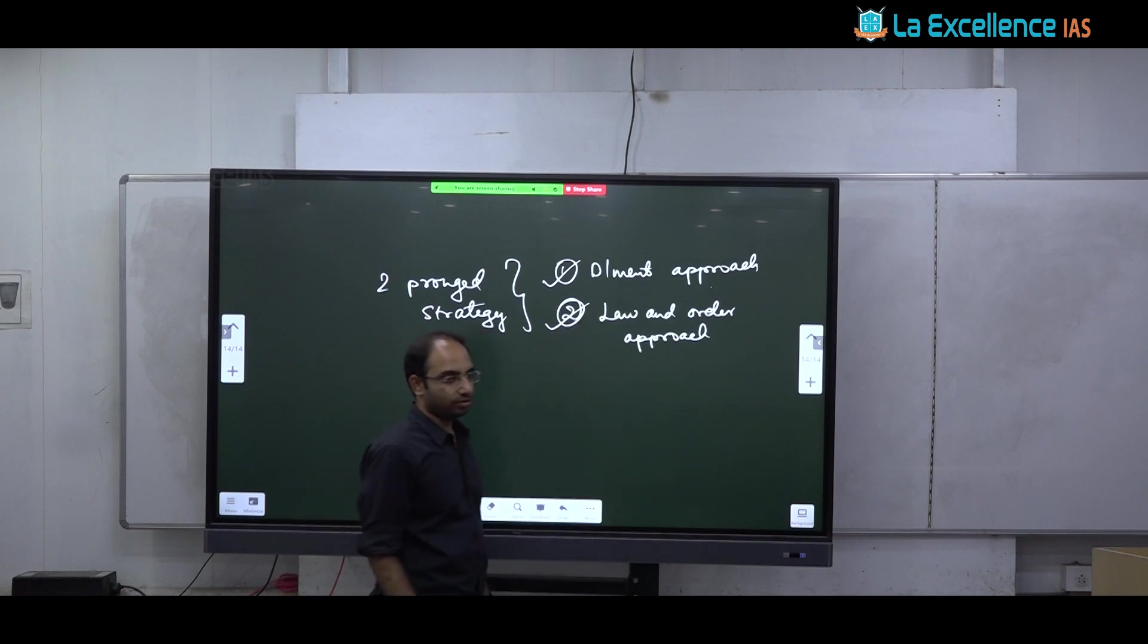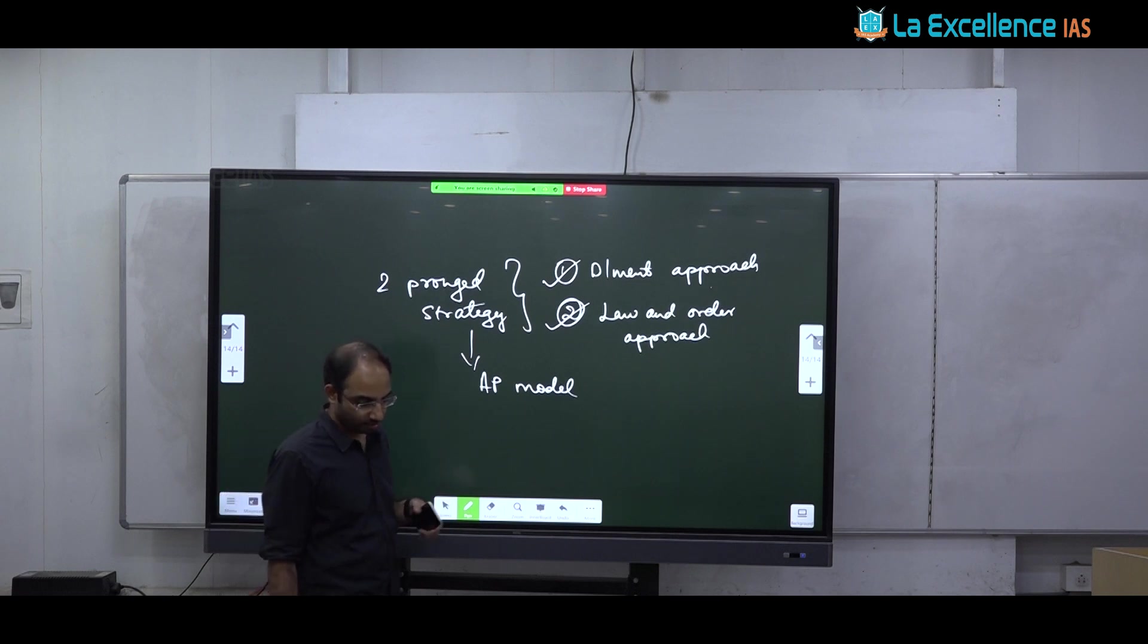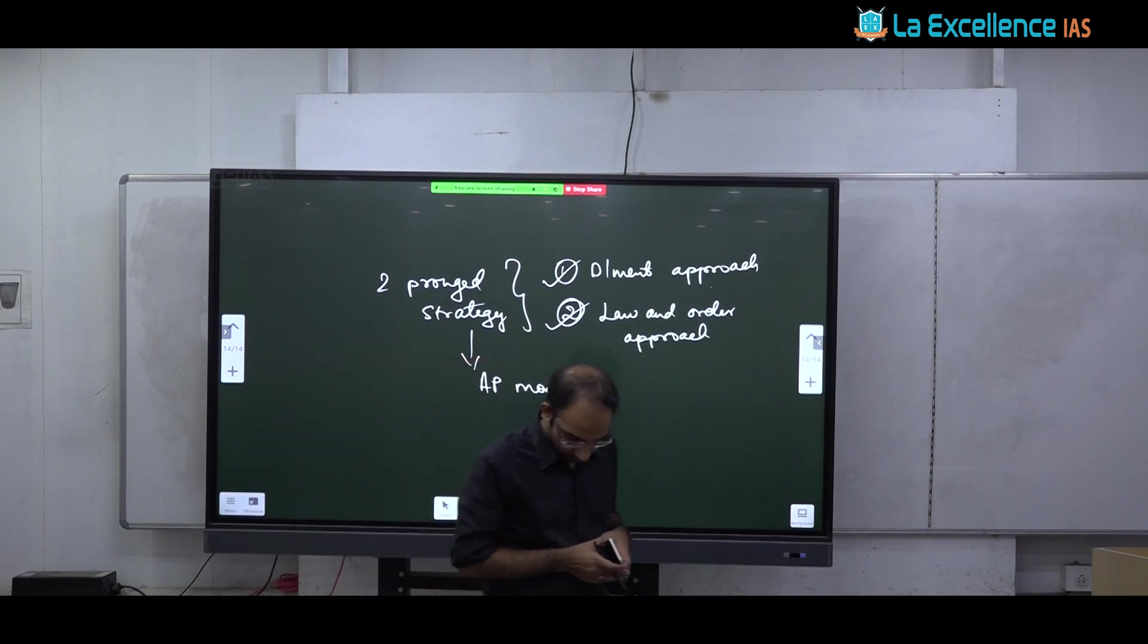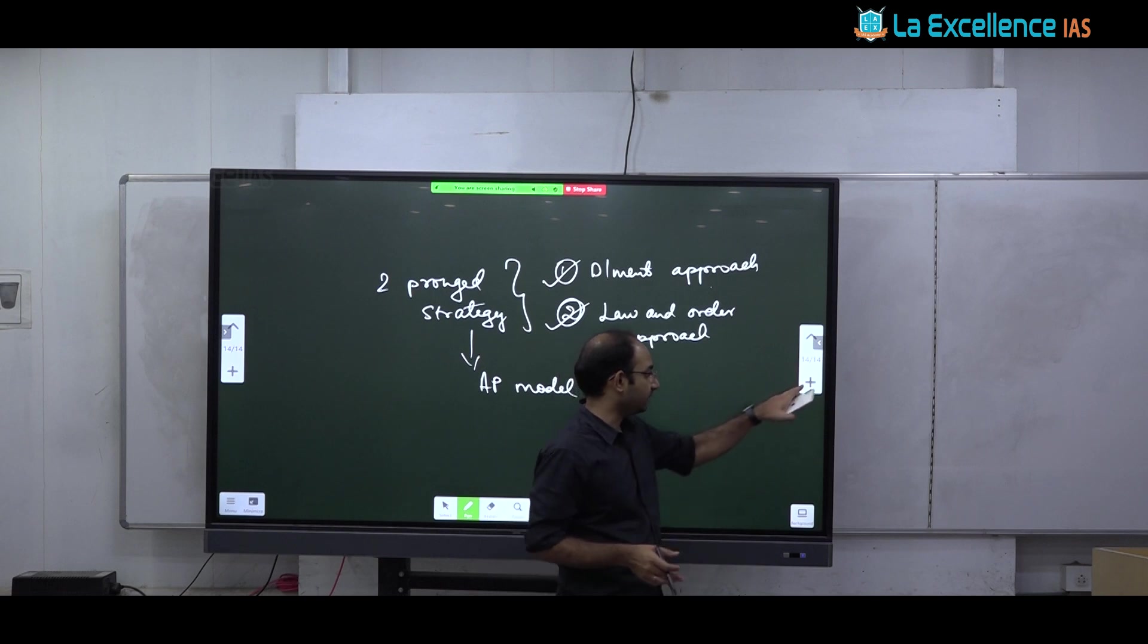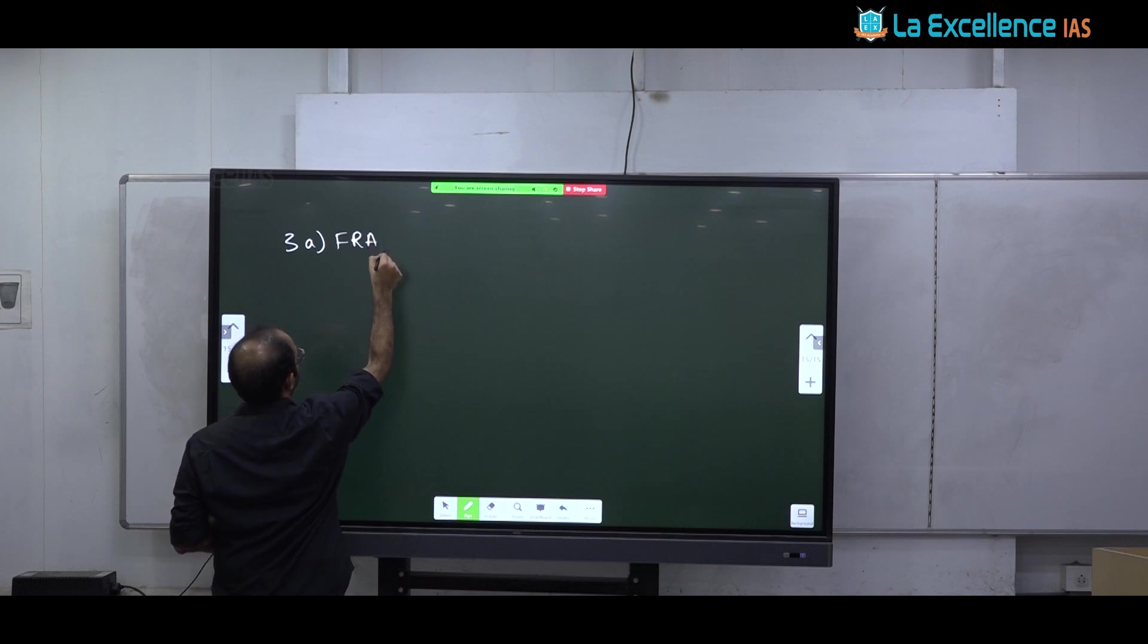Today, AP state, both AP and Telangana are almost free of nuxtual activity. Next, 3A. This is very important, FRA. I am expecting this question this year. So first, you must start with the backdrop of forest policies. Here, in this backdrop, you must discuss the relationship between tribals and forests. How? They have a kind of symbiotic relationship. Briefly, not very long, but very briefly, you must explain the kind of symbiotic relationship they have.